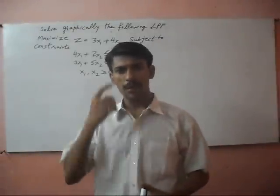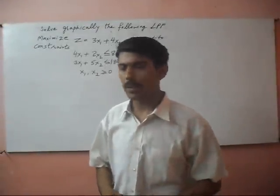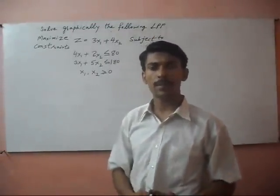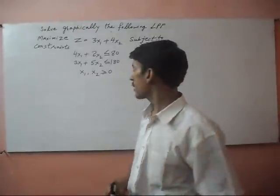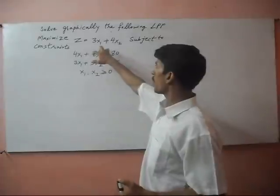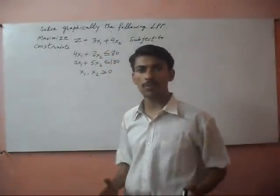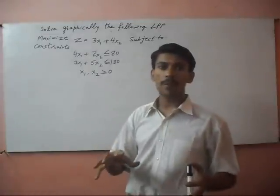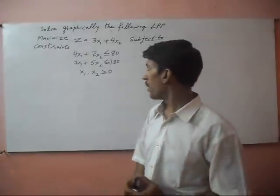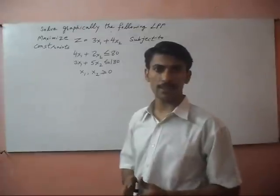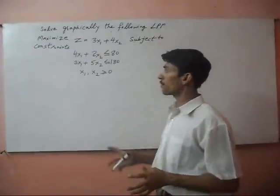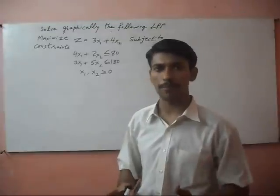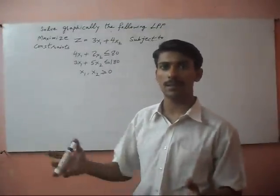Hello friends. Last time I explained the linear programming problem structure, in which I explained that first we have to maximize our objective function when there are work conditions. We convert our business problem into mathematical equations to solve linear programming problems. There are two methods: the simplex method and the graphical method.